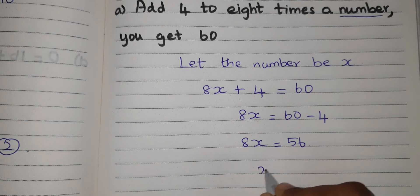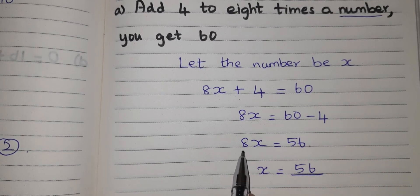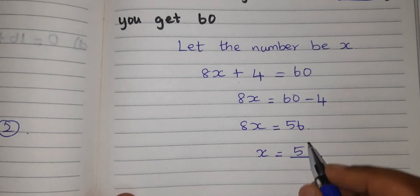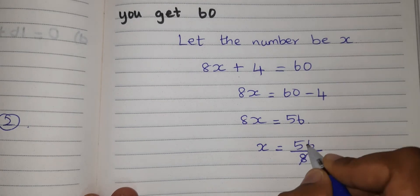Next I have to find out X. So keep 56. Here 8 is in multiplication. When it goes to next side it will go as division.